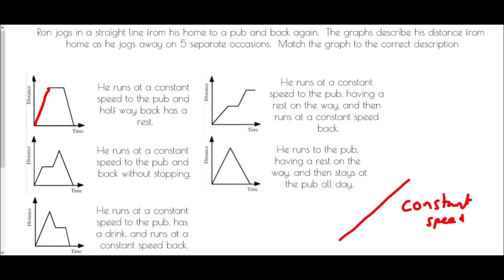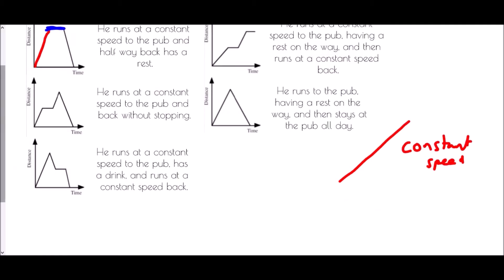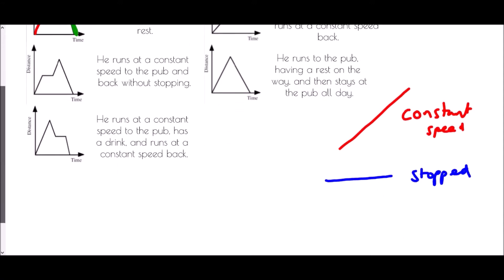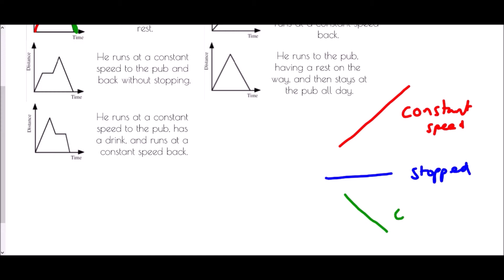If we find a point that is flat, well that means the distance is not changing as time goes on. So a flat line means that you must have stopped — there must be something that has paused the situation. And finally, if a line descends and it is straight, it means constant speed. The red line would be a constant speed away from your starting point, and the green line is coming back at a constant speed.